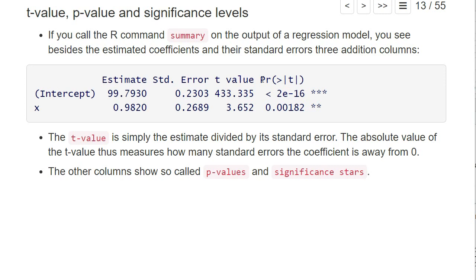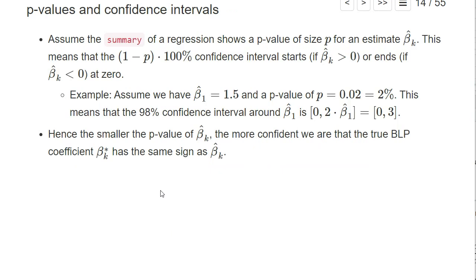Then this fourth column shows the so-called p-value, and the last column shows the significance stars. You probably have heard about p-values in earlier statistics classes. One way to think about them is that they are linked to confidence intervals. For example, if we have a positive estimated coefficient and a p-value of 0.02, it means that the 98% confidence interval (100% minus the p-value) starts exactly at 0.